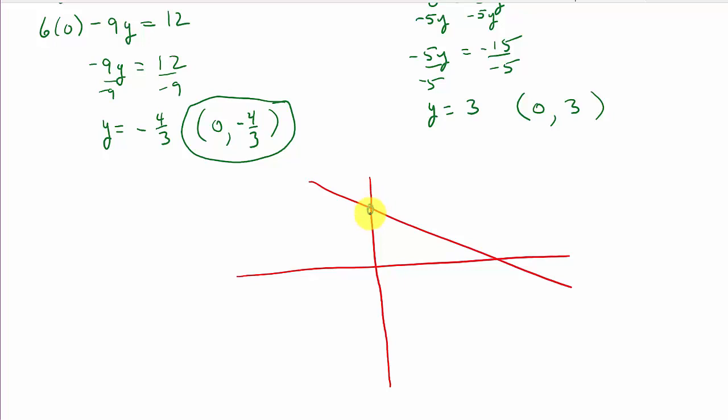Now, look at this. It intersects here, and it intersects here, right? This is your x intercept where it crosses the x axis. This is your y intercept where it crosses the y axis.